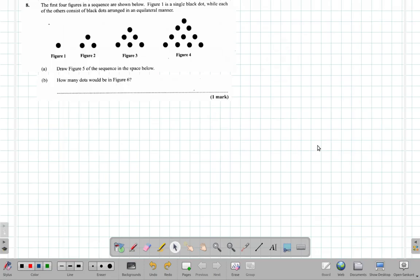Welcome back. We want to take a look at question 8. We're looking right now at question 8A and B of the May 2017 paper. It says the first four figures in a sequence are shown below. Figure 1 is a single black dot you can see here while each of the others consist of black dots arranged in an equilateral manner.